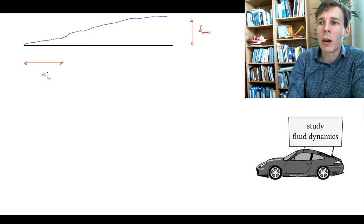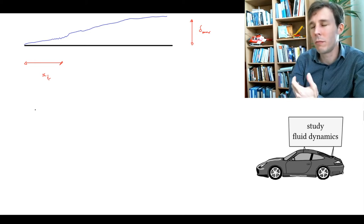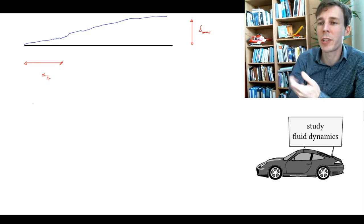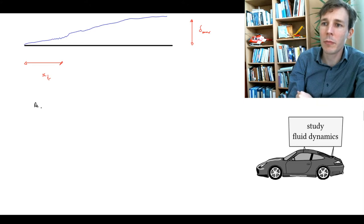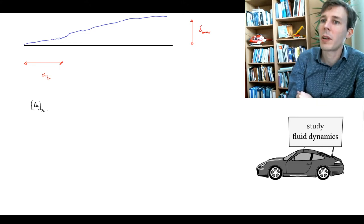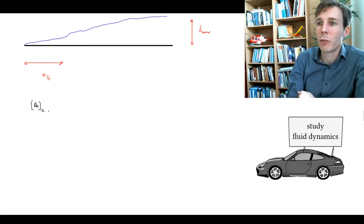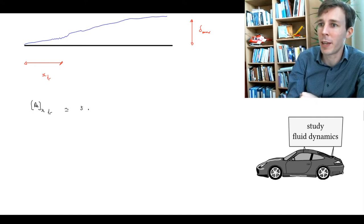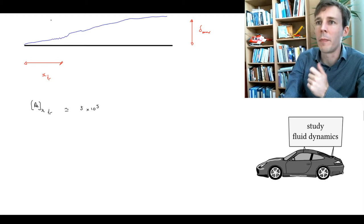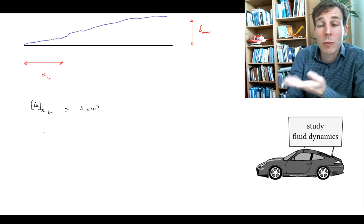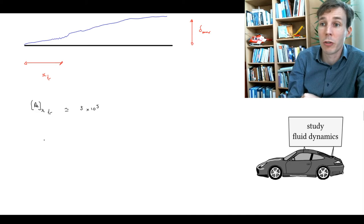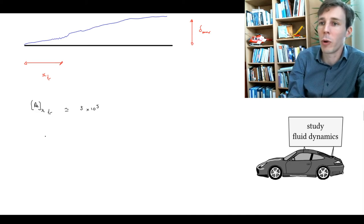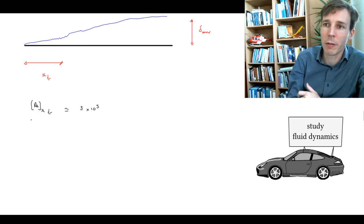The transition point is guided by a general principle, which says that the Reynolds number, based on distance, at which a boundary layer transits in general, is approximately half a million, 5 times 10 to the power 5. And based on this, we can find which position the transition occurs at for the given flow conditions. So let's expand this.